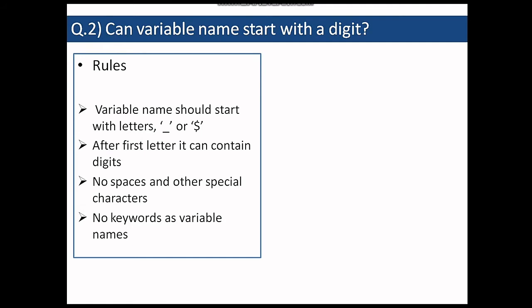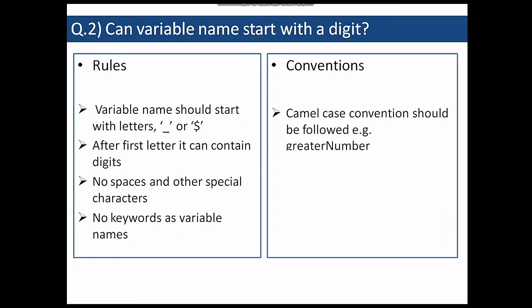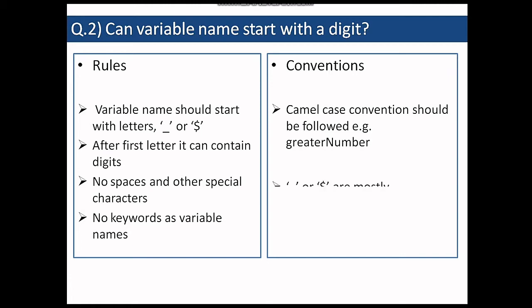Then there are some conventions which are not compulsory to follow but it is a good practice to follow. So the first is that the variable name should be in camel case convention. That is if the variable name has two words, first word, first letter should be small and after that every word, first letter should be capital. So underscore and dollar are allowed but it is not recommended to use it mostly. So you only use letters wherever possible.